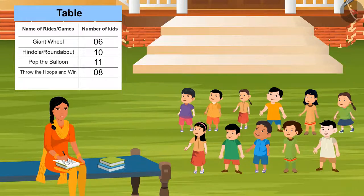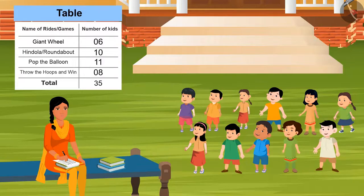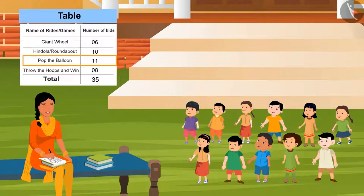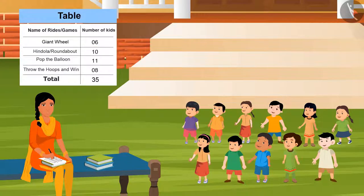This will help me to know how many tickets I have to buy for each game. Can you tell how many total tickets we have to buy? 35. Can you tell which game needs the most number of tickets? Pop the Balloon. Right, now tell me for how many games I have to buy more than 8 tickets? 2. Absolutely correct. So, did you see when I collected the data and arranged it into a tabular form, how easily you have given answers to my questions?